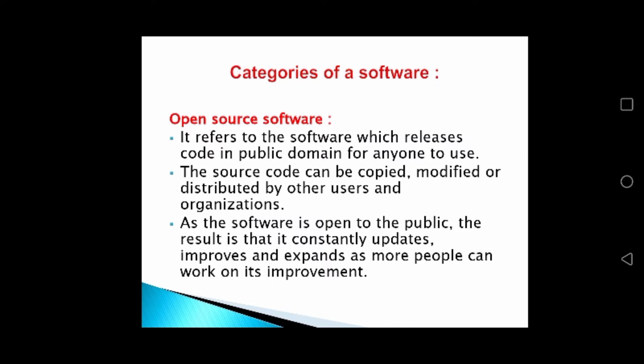That's why we have many software updates every time. When we change the source code of open source software, as the software is open to the public, the result is that it constantly updates, improves, and expands as more people can work on its improvement. Our advantage is that we always get different updated software, and people always work on their source code and modify them to give good improvement software.